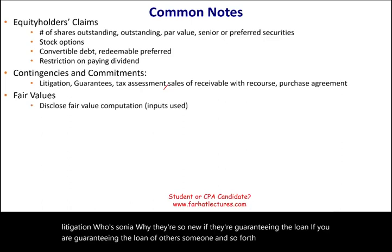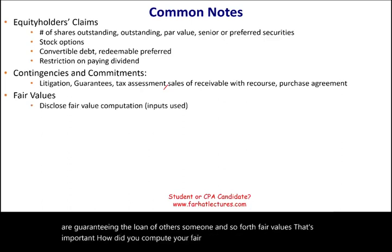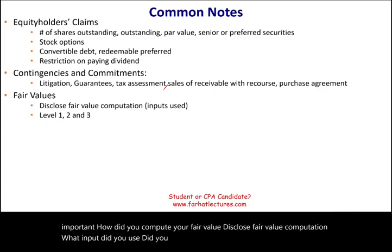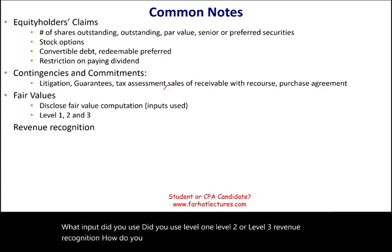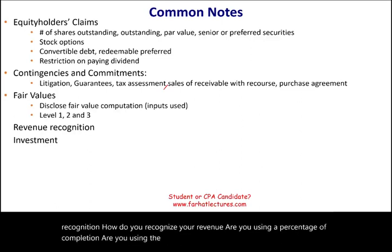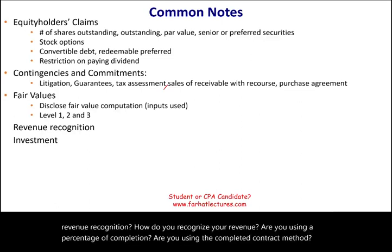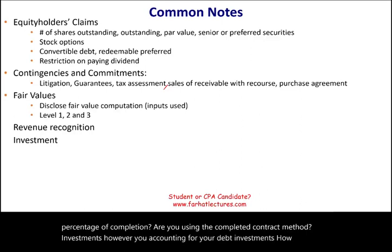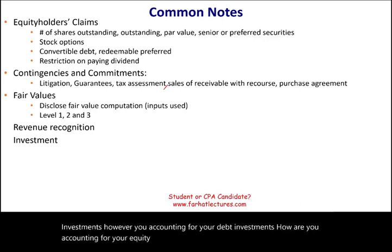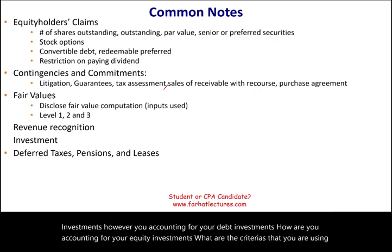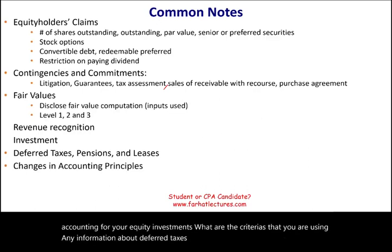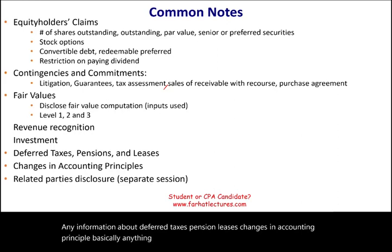Fair values — that's important. How did you compute your fair value? Disclose the fair value computation and what inputs you used: level one, level two, or level three. Revenue recognition: how do you recognize your revenue — are you using percentage of completion or the completed contract method? Investments: how are you accounting for debt investments and equity investments? Also disclose any information about deferred taxes, pension, leases, changes in accounting principle — basically anything.